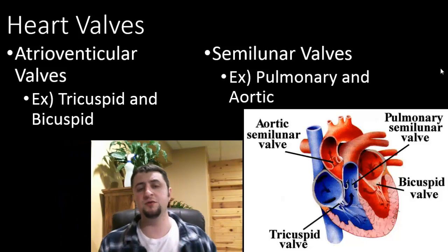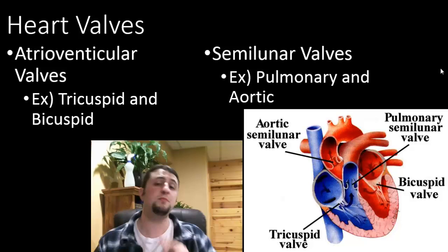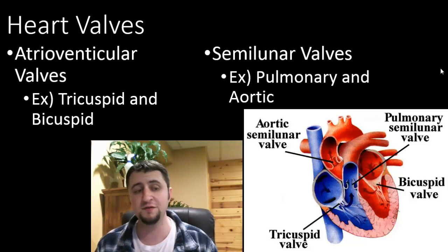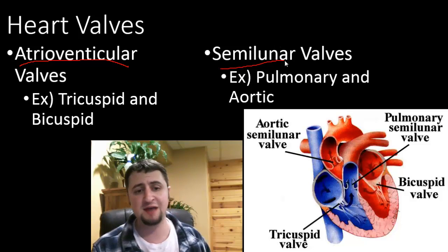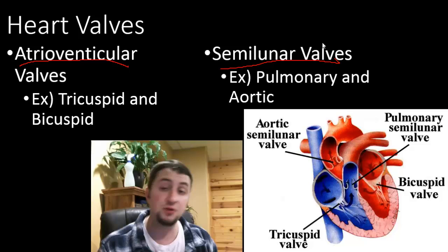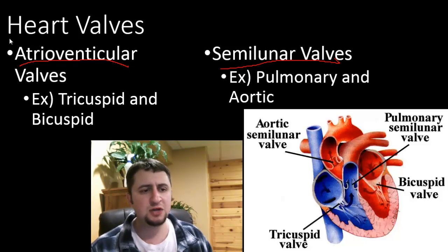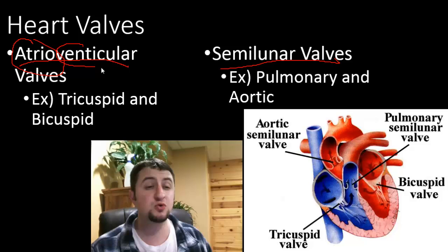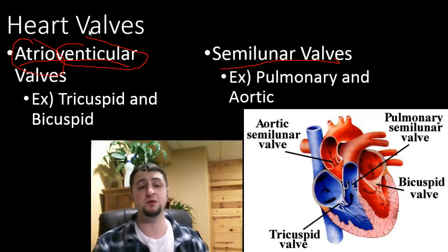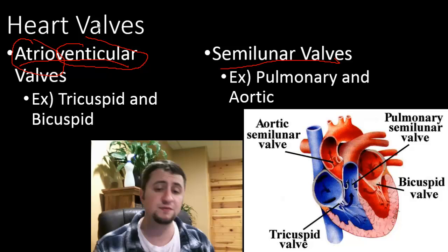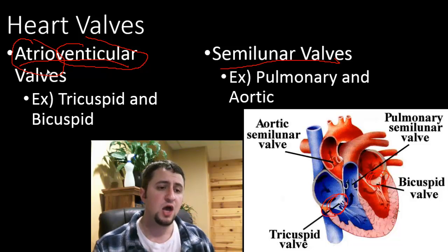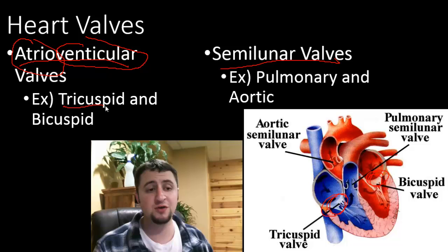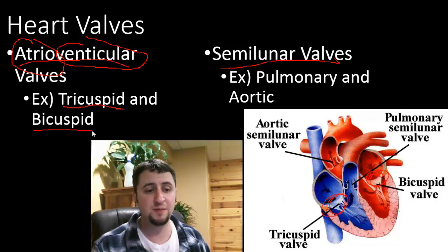We are now going to focus on the heart valves. There are two major types of heart valves: the atrioventricular valves and the semilunar valves. Use your root words here — atrio stands for atrium and ventricular stands for ventricle. So atrioventricular valves separate the atriums from the ventricles. Those are right here and right here. There are two of them: one is called the tricuspid valve and one is called the bicuspid valve.